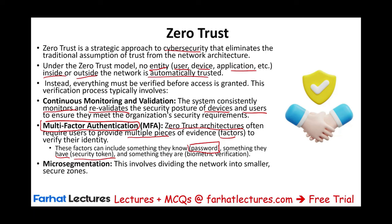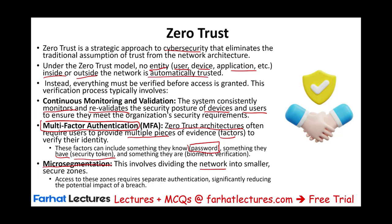Also within zero trust, you can use what's called micro-segmentation — dividing the network into smaller secured zones. If you're going to go from one zone to the other, you have to re-verify yourself. Access to these zones requires separate authentication, significantly reducing the potential impact of a breach. You want to make sure everyone there is verified, authorized, and good to go.